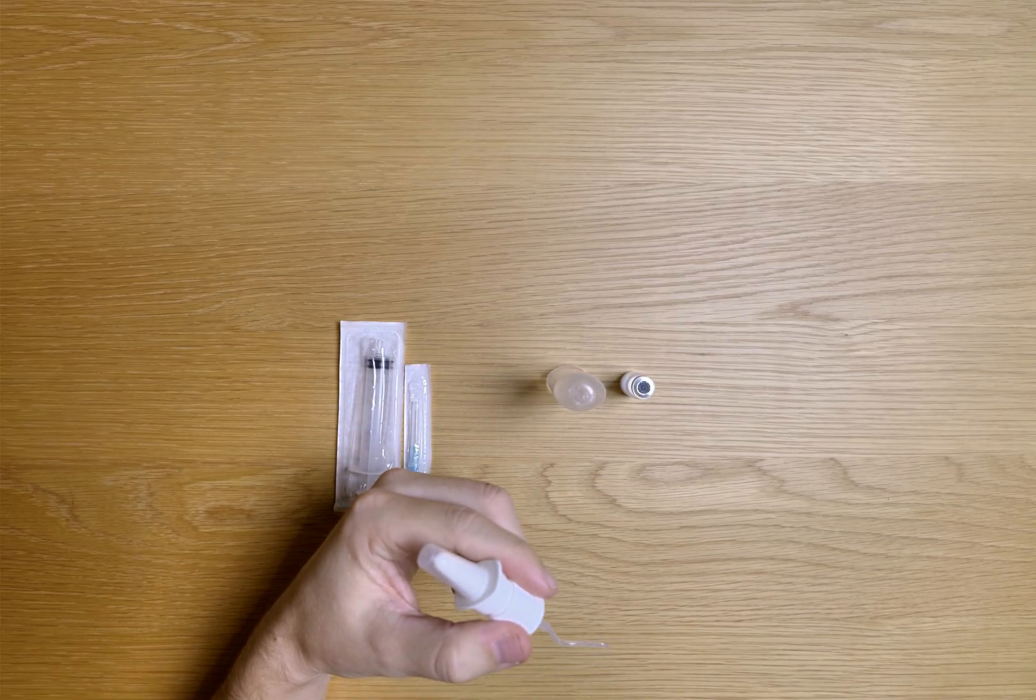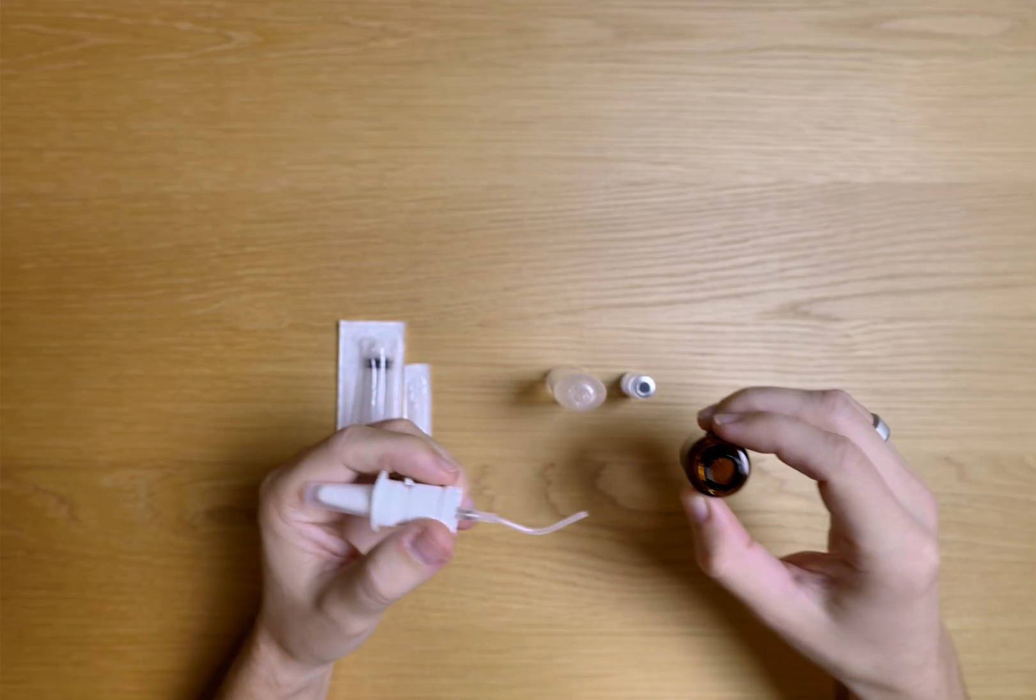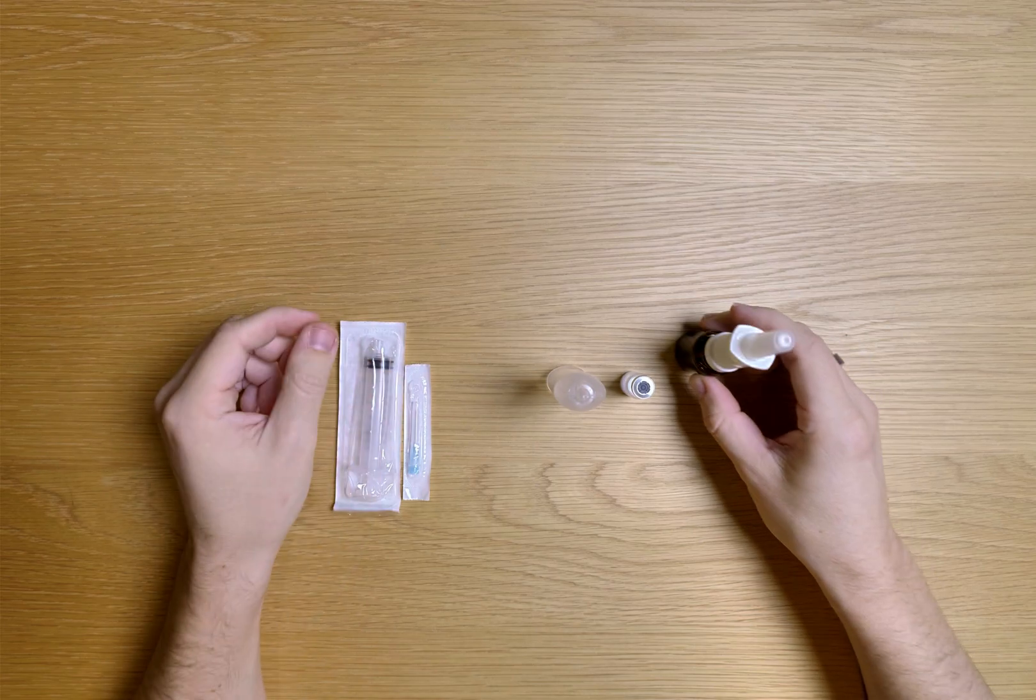I'm going to remove the excess liquid, just shake it to make sure it's empty again. I don't know if it shows up, but yeah, I emptied it out. Then I'm just going to put it loosely on here, put it on the side.